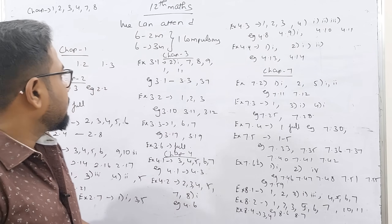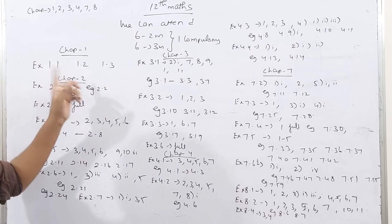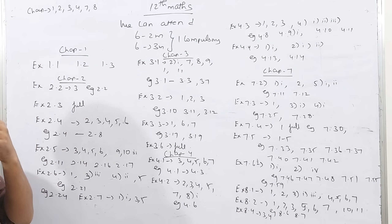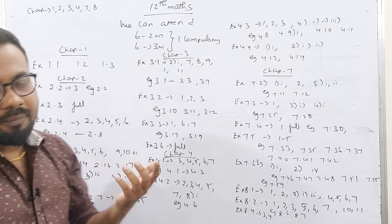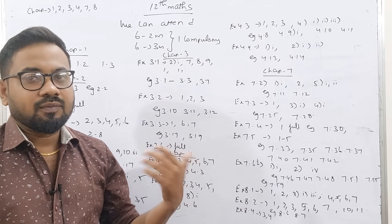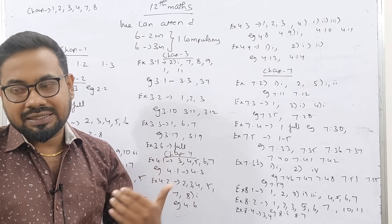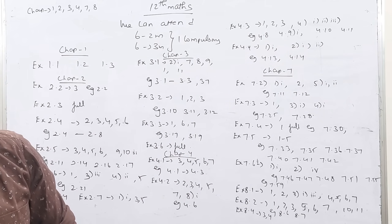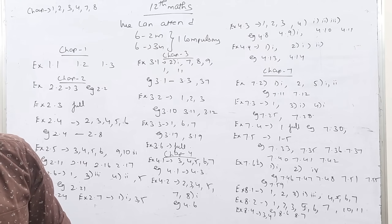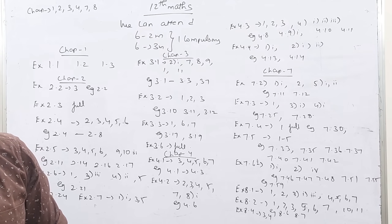This is the one. The first chapter is 1.1, 1.1, 1.3. So 1.1 is the same. Numbers 6, 7, 8, 9, 10 — this is very important. This is already given.